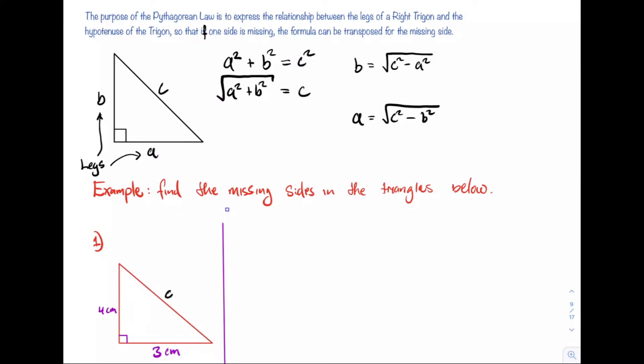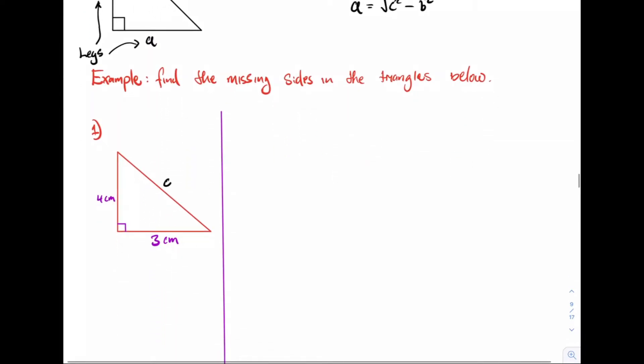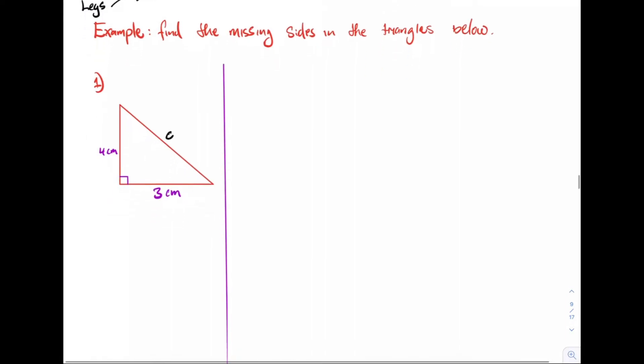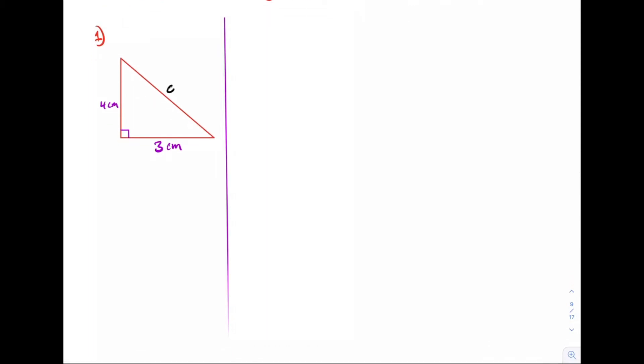Our first example here gives us this trigon and we see that the hypotenuse is missing. So here we can write down the relationship C squared is equal to 4 squared plus 3 squared, which implies that C squared is equal to 16 plus 9, which means that C squared is actually equal to 25. In order to find C, we'll say that C is equal to the square root of 25, which means C is equal to 5. Therefore, we have solved. We were given units, centimeters, so our answer has to be in centimeters. Notice that here I use the Pythagorean law as a process.